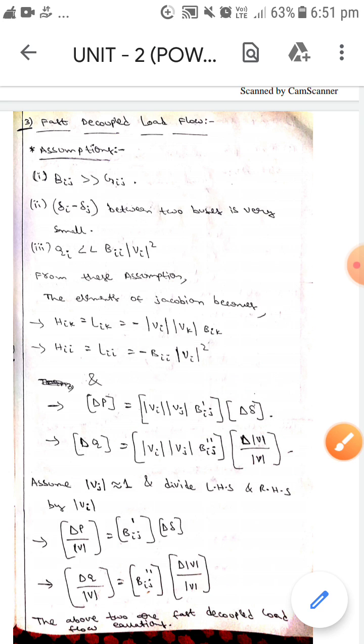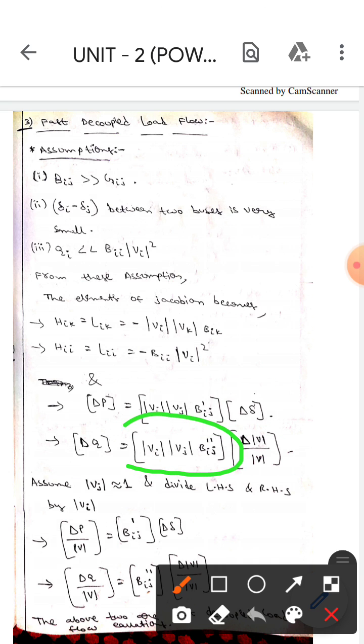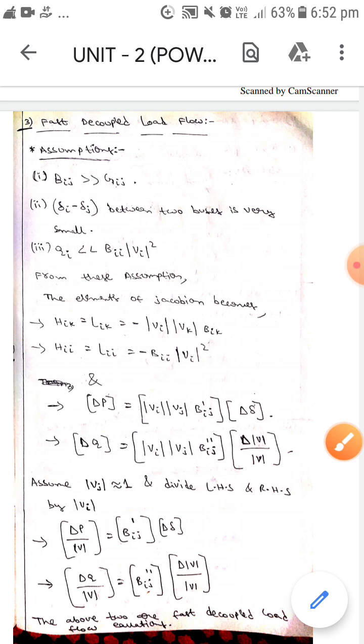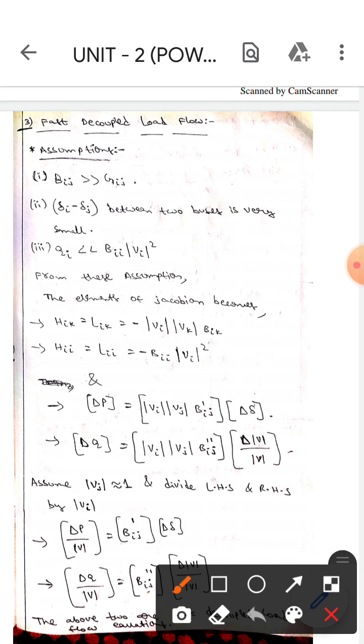into Bij. And also it is another form of matrix delta of modulus of V by modulus of V. Then here